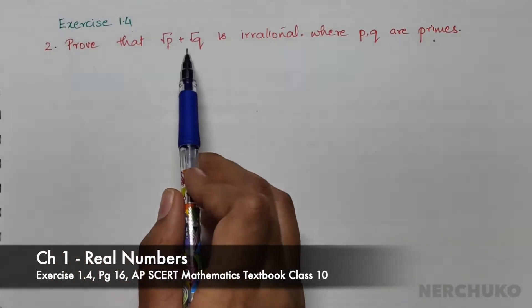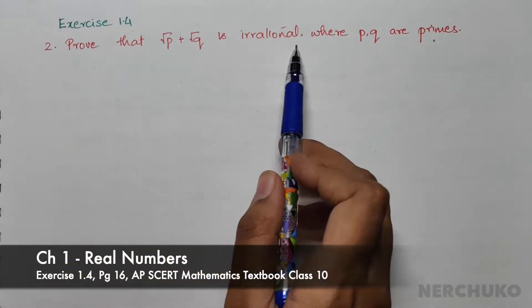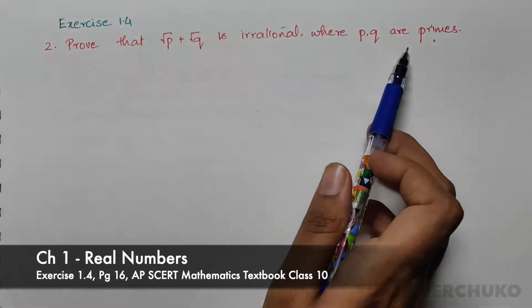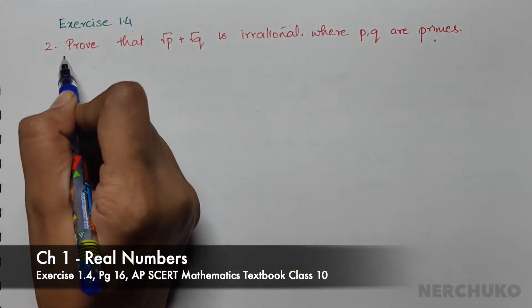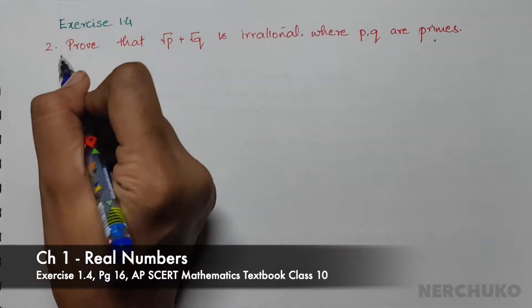To prove that root p plus root q is irrational where p and q are primes, let us first assume that root p is a rational number.